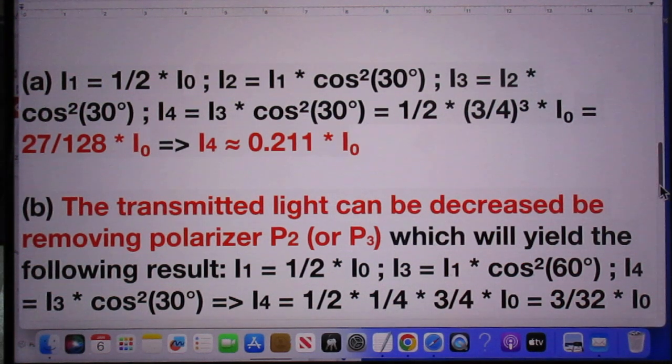When it goes to the second polarizer, that value, one-half I₀, has to be multiplied by the cosine squared of 30 degrees.